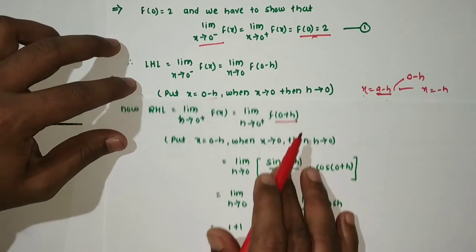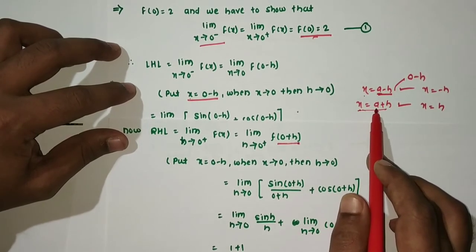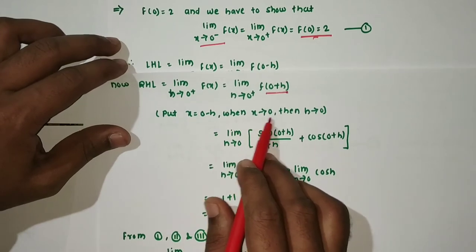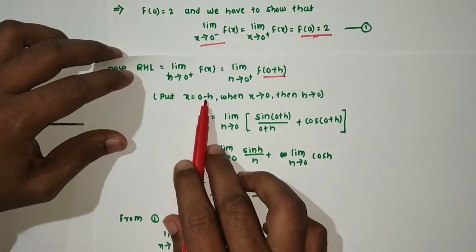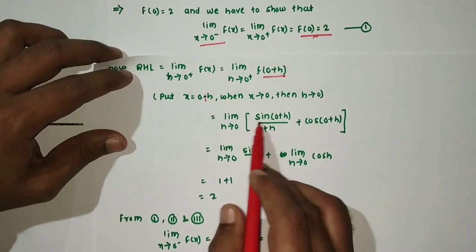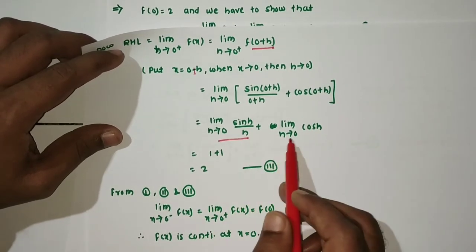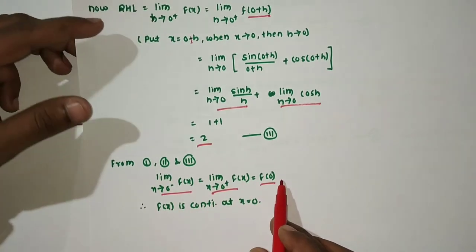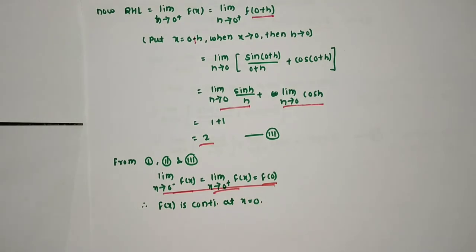For right hand limit: put x = h as h→0, giving sin(h)/h + cos(h). As h→0: sinh/h = 1 and cos(0) = 1, so right hand limit = 1 + 1 = 2. From all three: left hand limit = 2, right hand limit = 2, and f(0) = 2. Hence f(x) is continuous at x = 0.